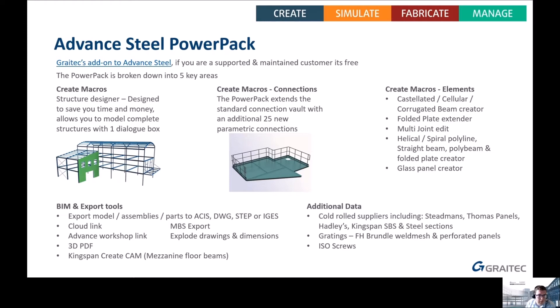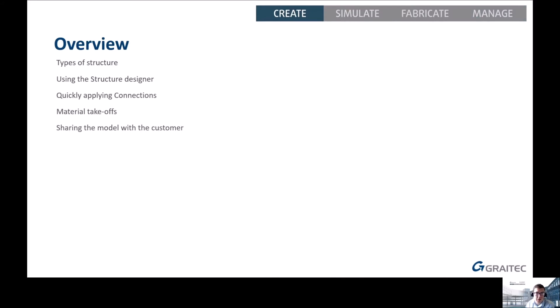We also have BIM import and export tools — we can export model assemblies or parts to ACES, DWG, STEP, or IGIS. There's a link to Advanced Workshop, a link to Advanced Design, an option to explode drawings, a 3D PDF tool, and a Kingspan floor beam export tool. The Power Pack also adds extra sections such as cold roll suppliers including Stedmans, Tom's Panels, Hadleys, certain Kingspan sections, weld mesh, perforated panels, ISO screws, and half-round square edge bars.